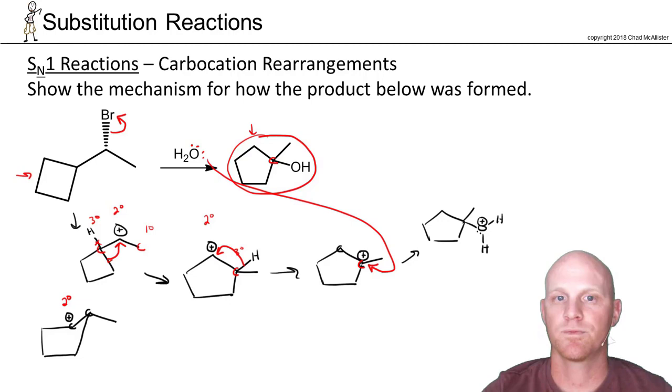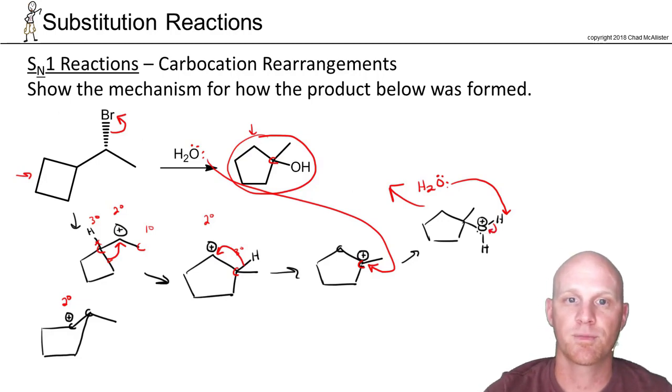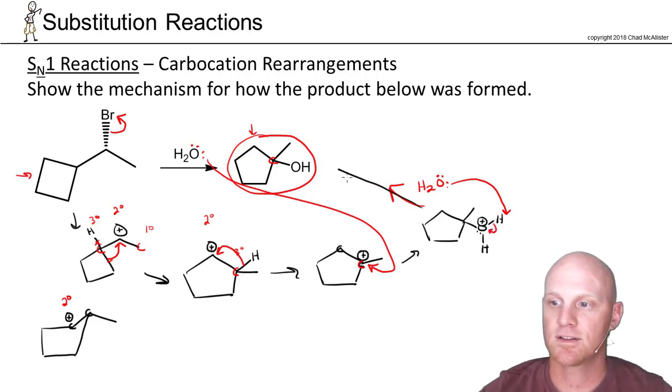We've got three bonds to an oxygen with a positive charge—we're not done yet. We'll do a proton transfer. Our solvent is water, so another water molecule will deprotonate one of those hydrogens, getting us to our final product and forming hydronium.